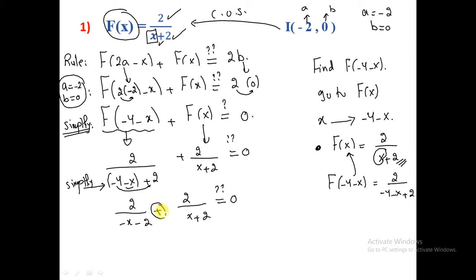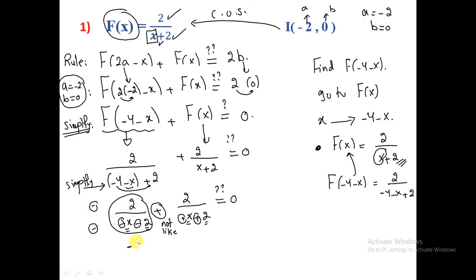We have an addition of two fractions, so we need like denominators. The denominators are not like, but they differ only in signs. Instead of multiplying by minus, let me change the sign of the entire first fraction. This gives us -2/(x+2) + 2/(x+2).